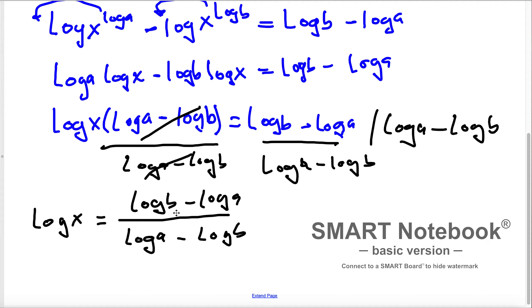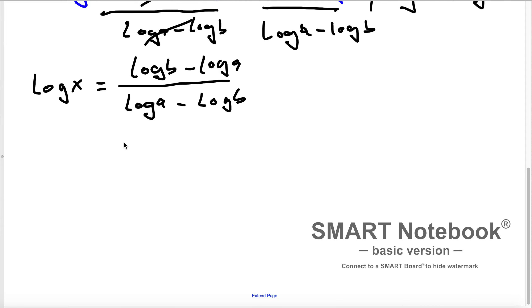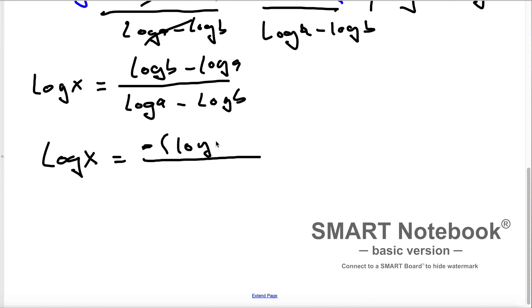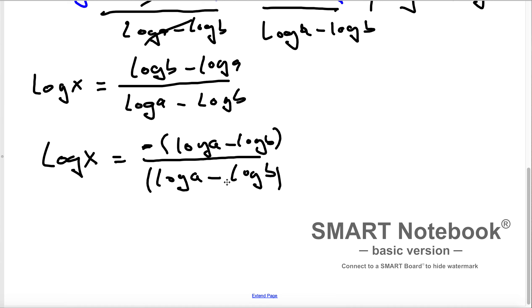As we see here, we can factor out a minus sign from either the numerator or denominator to make like terms. Let me factor out minus from the numerator: minus (log a minus log b), and the denominator is log a minus log b. Since these are like terms, we can simplify — log a minus log b cancels — and what remains is log x equals minus 1.